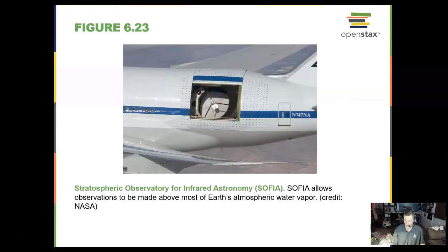We can put observatories into the upper atmosphere. SOFIA allows us to do that and get above most of the Earth's water vapor, which is blinding to infrared light.